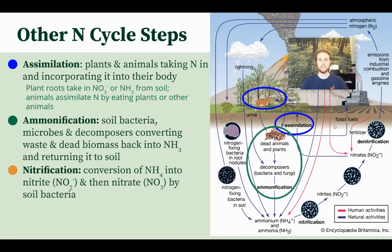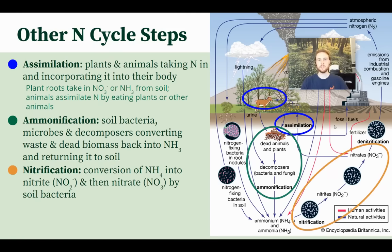Next is nitrification, the process where ammonium (NH4) is converted into nitrite (NO2) and then eventually into nitrate (NO3). This is also done by soil bacteria. Bacteria are very critical at almost every step of the nitrogen cycle process. We can see nitrification outlined in the orange circle in the diagram.